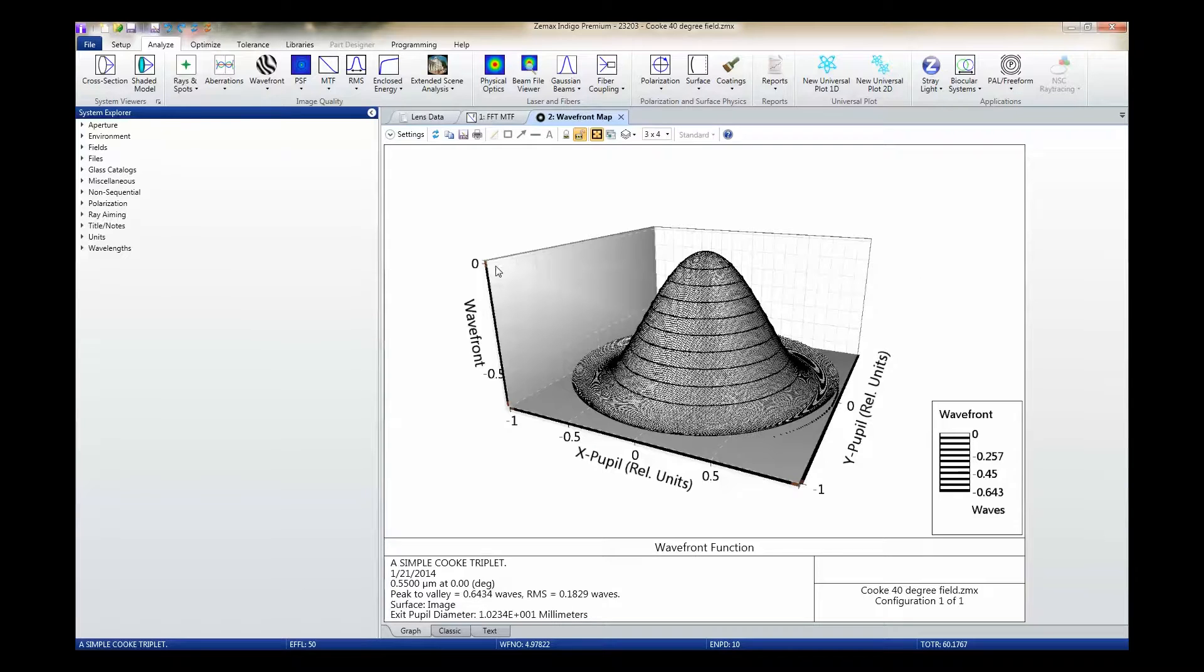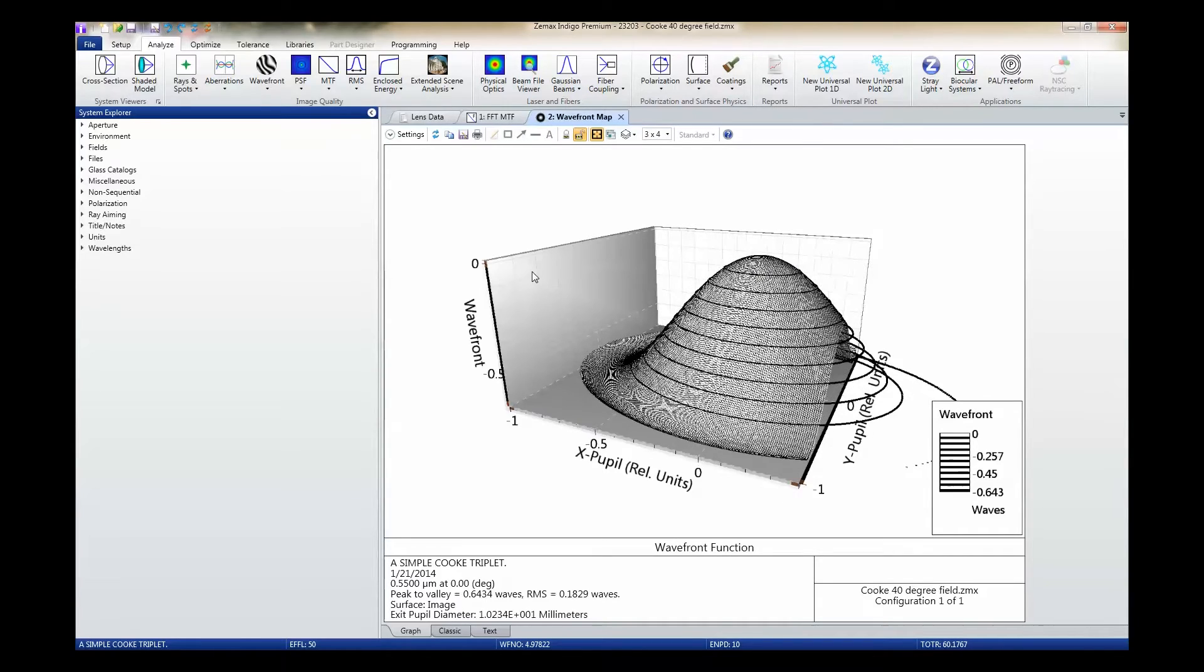And finally, data ranges can again be dynamically modified on the plot using markers which have been placed on the corners of the axes, just as we saw with the 2D data.